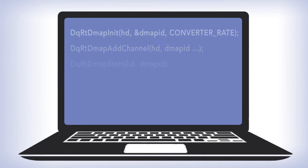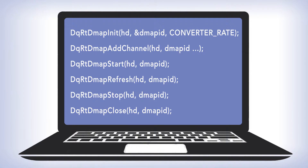Here is the code to set up an RTDMAP. It has a total of six API calls to set it up, start and use it, and then shut it down.